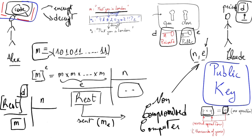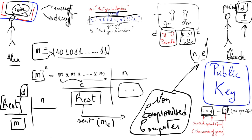This assumes that Claude has a non-compromised computer — meaning no virus or spyware that could access Claude's private key D. If someone has D, they can simply decrypt and read 'meet you in London.' Another way to break public key encryption is to try to compute P and Q from Claude's public key, but a brute-force attack like this would take thousands of years with the most powerful computers available, unless Claude is using a very weak public key.